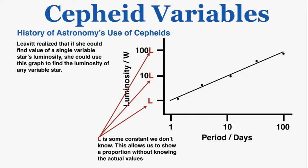This graph is similar to what her graph showed. If the period of one variable star is ten days and another is only one day, the luminosity of the ten-day period star will be about ten times as big as the one-day period star. So even without knowing the true luminosity values, she could get this relative comparison of the luminosities of different stars.